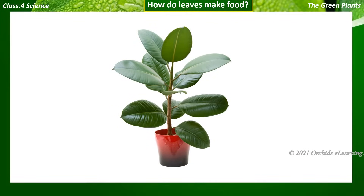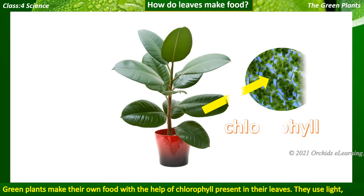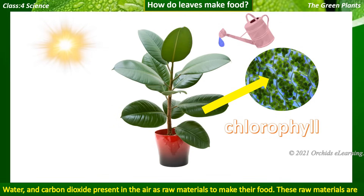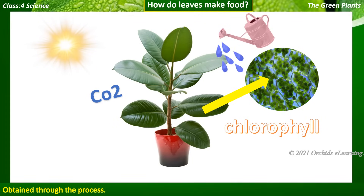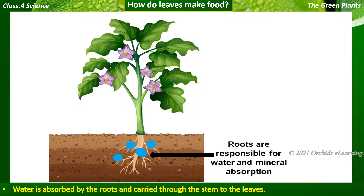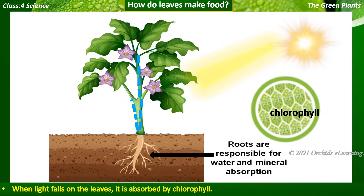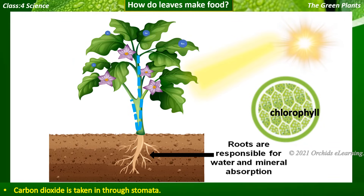How do leaves make food? Green plants make their own food with the help of chlorophyll present in their leaves. They use light, water, and carbon dioxide present in the air as raw materials to make their food. These raw materials are obtained through the following process: water is absorbed by the roots and carried through the stem to the leaves. When light falls on the leaves, it is absorbed by chlorophyll. Carbon dioxide is taken in through stomata.